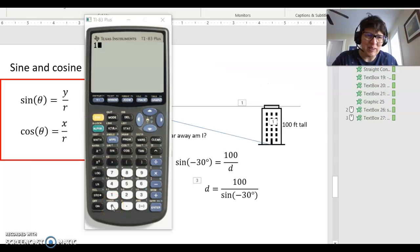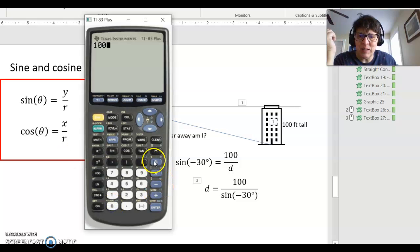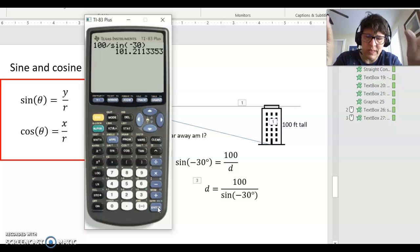I started typing in the calculator and realized I didn't hit record. So 100 divided by sine, right here on your calculator, sine of negative 30, enter. So this says about 101 feet.